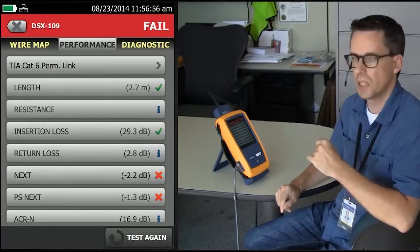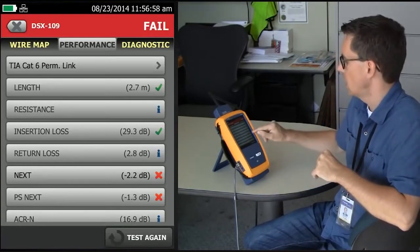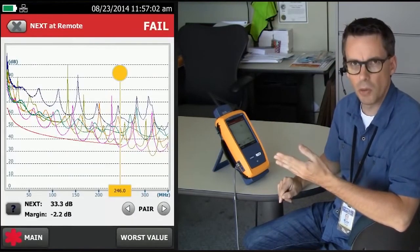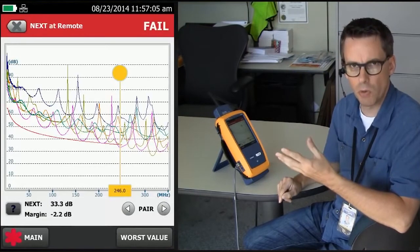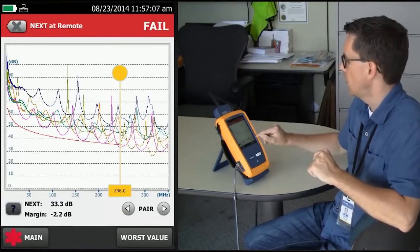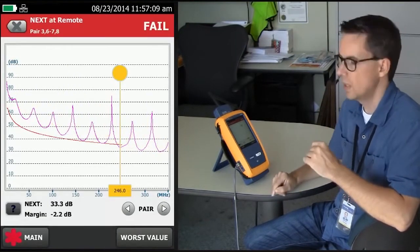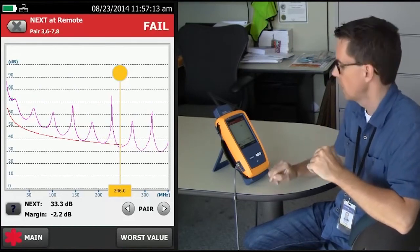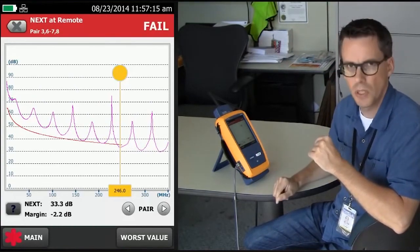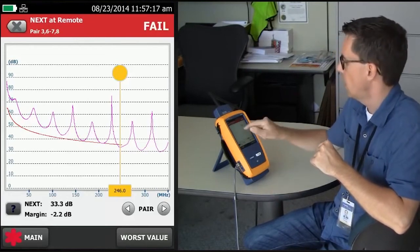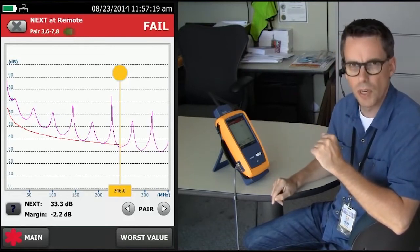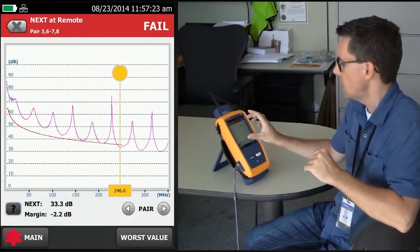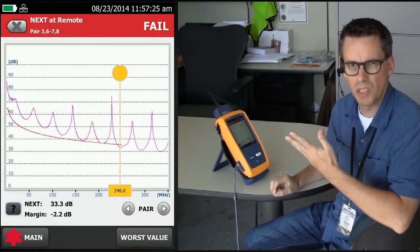Let's see why this failed. I'm going to tap Nearing Crosstalk. It's going to show me all six pair combinations from the remote because that's where the worst performing crosstalk appeared. And if I tap the pair on the right here, it's automatically going to go to the worst performing pair combination that gave us that minus 2.2 dB. The pair this time is not 3645, it's actually 3678. That's all the information I can get from this screen that's particularly useful to me.